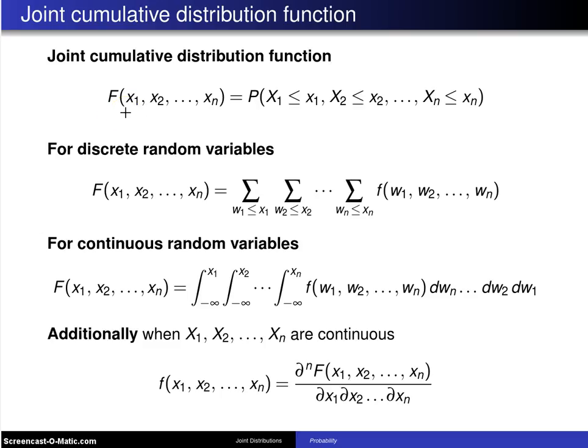In both the discrete and the continuous case, the joint cumulative distribution function is denoted by capital F of x1 up to xn, and it is the probability X1 is less than or equal to x1, X2 is less than or equal to x2, up to Xn is less than or equal to xn.